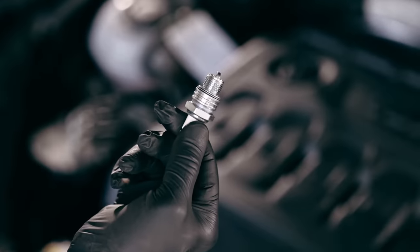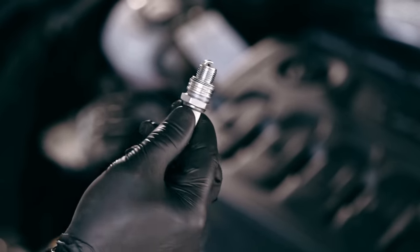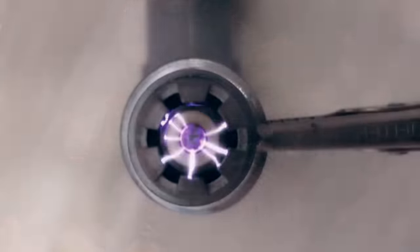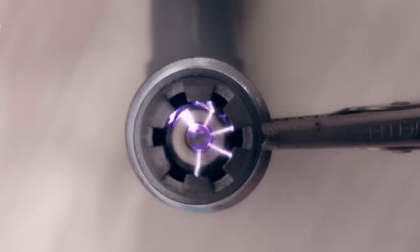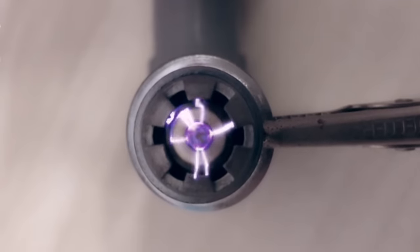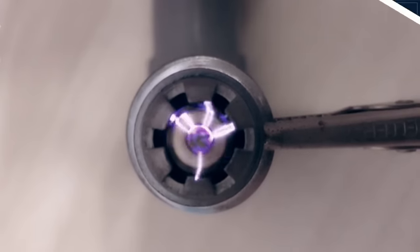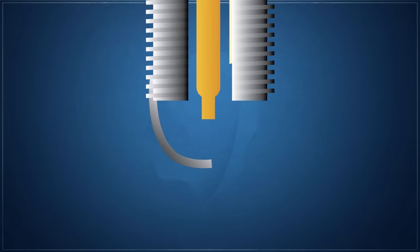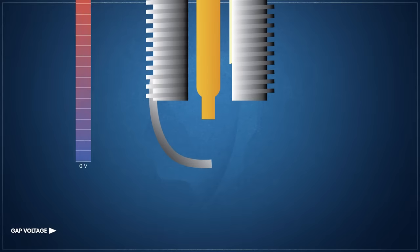Though spark plugs may appear as simple devices, reliably igniting over 20 million combustion cycles while surviving exposure to the extreme temperatures and pressures of ignited fuel would prove to be a formidable challenge. All spark plugs are fundamentally composed of two electrodes separated by an insulator. These electrodes converge at a spark gap, where spark generation occurs.